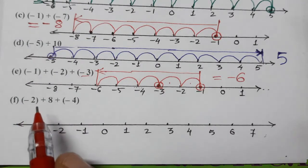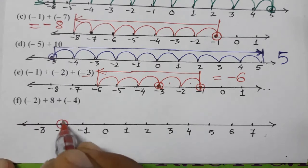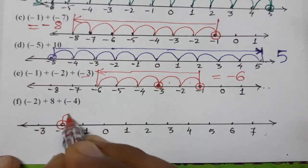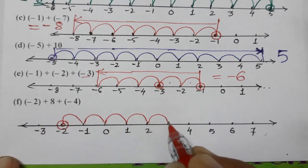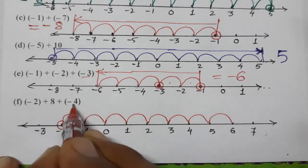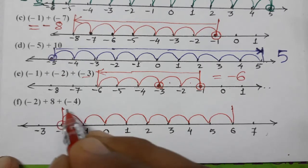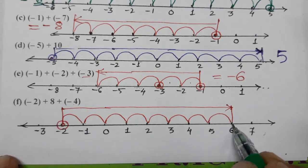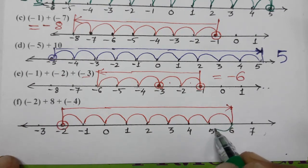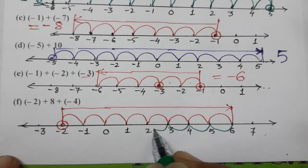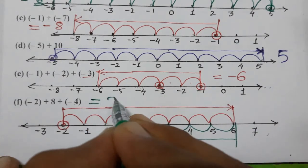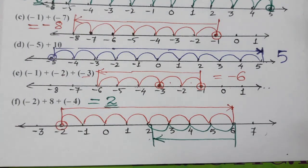The last one: (-2) + 8 + (-4). We start with minus 2. Plus 8 means move eight points to the right — one, two, three, four, five, six, seven, eight — so we reach at 6. Then minus 4 means move four points to the left — one, two, three, four — and we finally reach at 2. So the answer is 2. I hope you understood how to plot points on a number line. Thank you so much for watching the video.